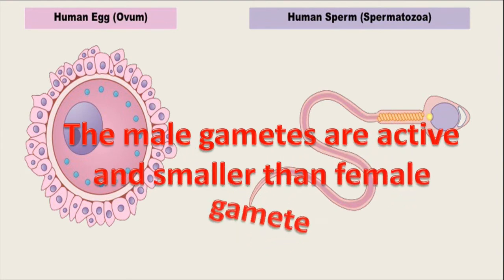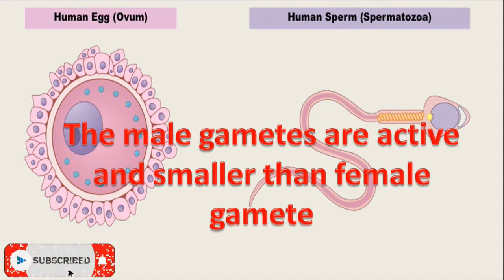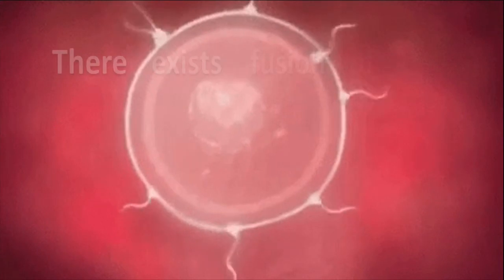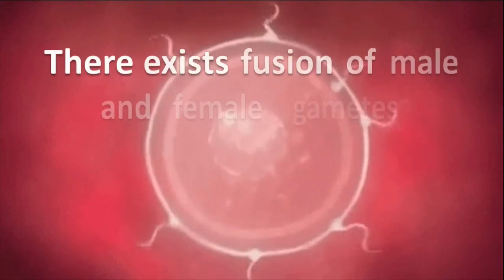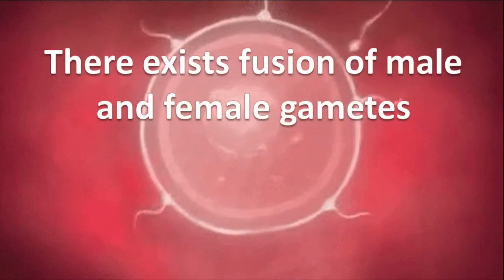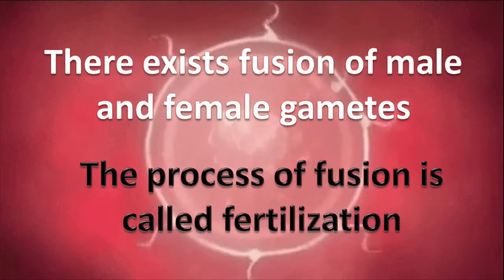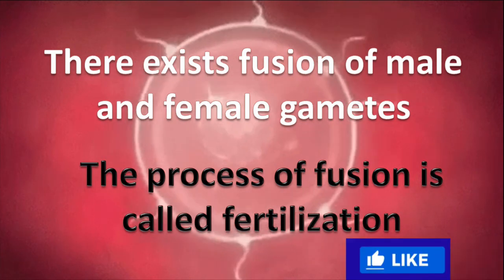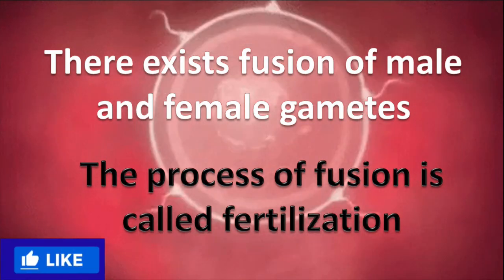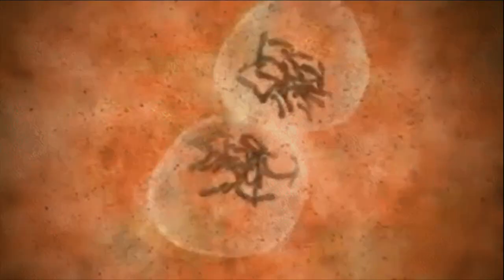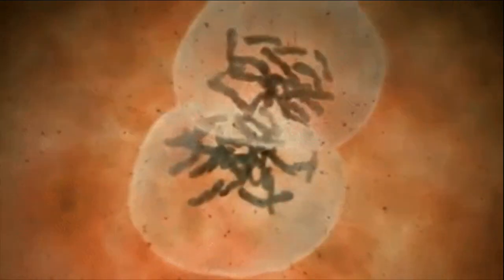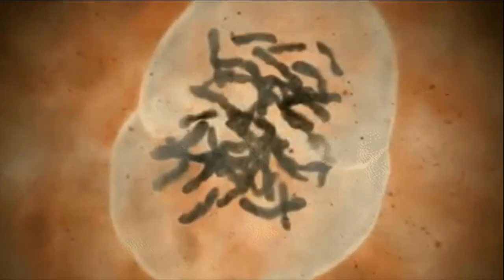The male gametes are active and smaller than female gametes. There exists fusion of male and female gametes, and the process of this fusion is called fertilization. Male and female gametes fuse to form a single cell.